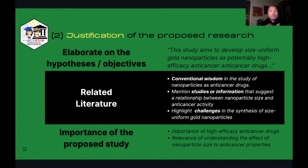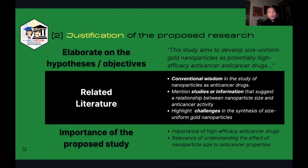Then you highlight the challenges around the synthesis of size-uniform nanoparticles. By highlighting the challenges, it becomes clear to reviewers or the funding agency that what you're proposing is addressing a very important challenge. If they can develop size-uniform particles, then we might be able to come up with an anti-cancer drug — and that is already transitioning into the importance of the proposed study. The correlation is: size uniformity leads to higher efficacy. This is how you write up a justification.